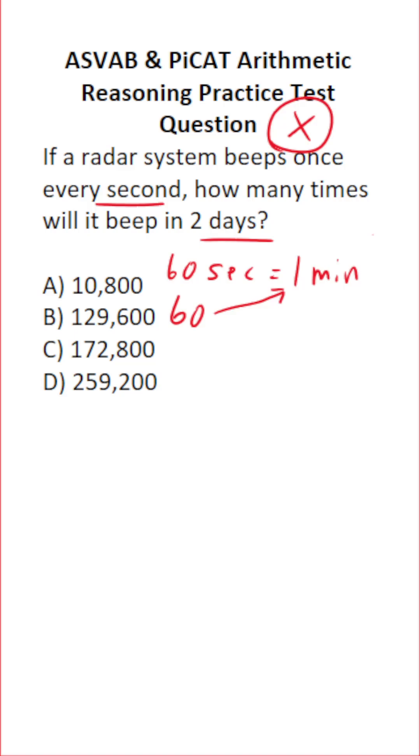All right, let's convert minutes to hours. There are 60 minutes in every hour. And if it beeps 60 times in a minute and there are 60 minutes in an hour, then it's going to beep 60 times 60 times per hour.